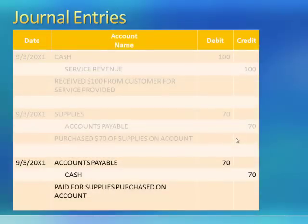The final economic event that we're going to look at happened on 9-5 of year one. Here we see a debit to accounts payable of $70 and a credit to cash for $70. We see that we paid for supplies purchased on account. One thing to notice in our journal is that we always write the accounts that are debited before we write the accounts that are credited. That's just a convention that is used by accountants.